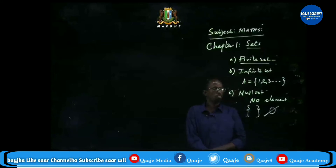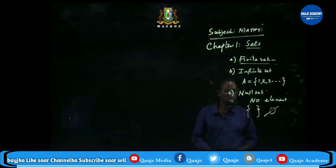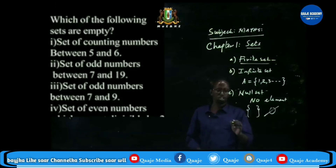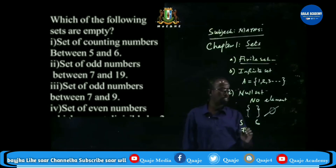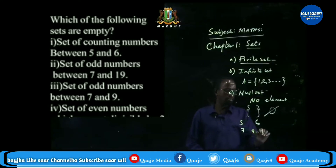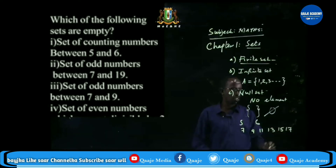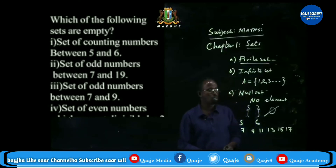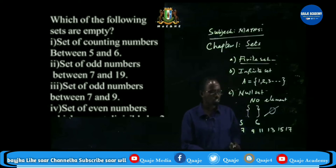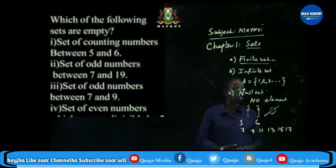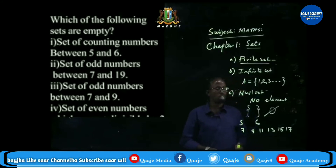Exercise: which of the following sets are empty? First, the set of counting numbers between five and six — there is no number between five and six, so this is an empty set. Second, the set of odd numbers between seven and nineteen: 9, 11, 13, 15, 17 — this is not an empty set. Third, the set of even numbers which are not divisible by two — all even numbers are divisible by two, so this is also an empty set.